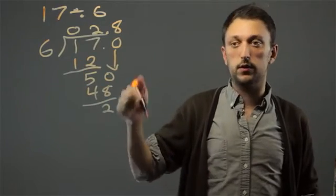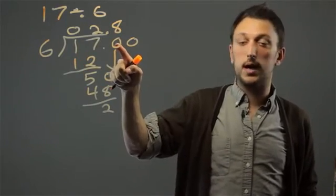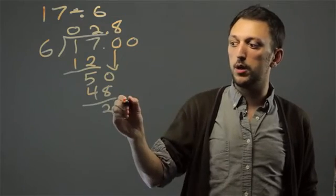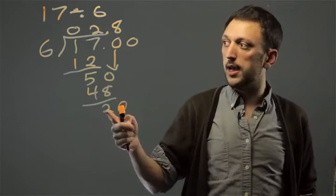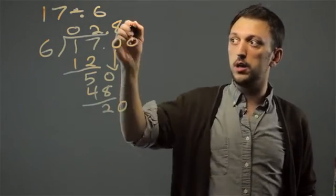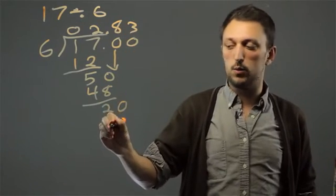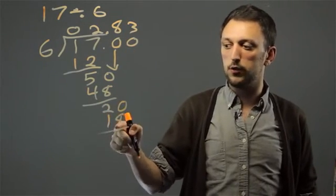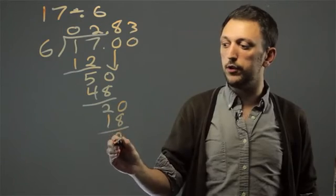6 doesn't go into 2, so we have to go another decimal place. We were at the tenths, now we're at the hundredths. We bring down the 0. And 6 goes into 20 three times. 18. 20 minus 18 is 2.